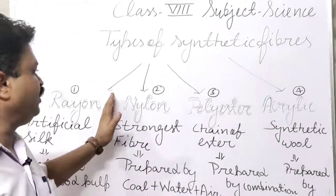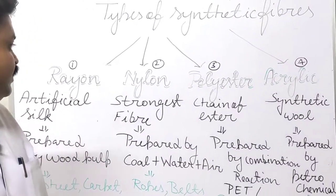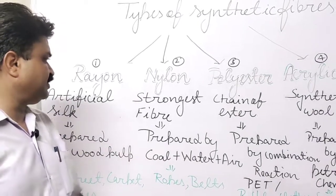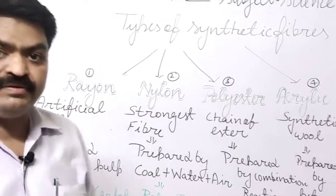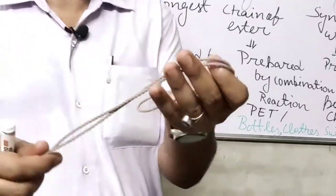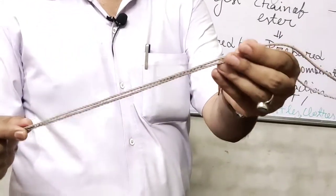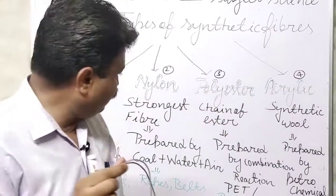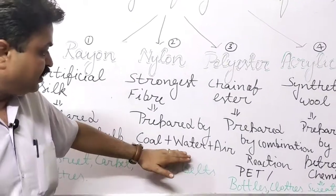Next is nylon. Nylon is the strongest synthetic fiber. With the help of nylon, ropes are prepared. I have a small rope in my hand and this rope is made up of nylon. Nylon is a synthetic fiber and it is prepared from coal, water, and air. When coal, water, and air are combined together, we get nylon fiber.